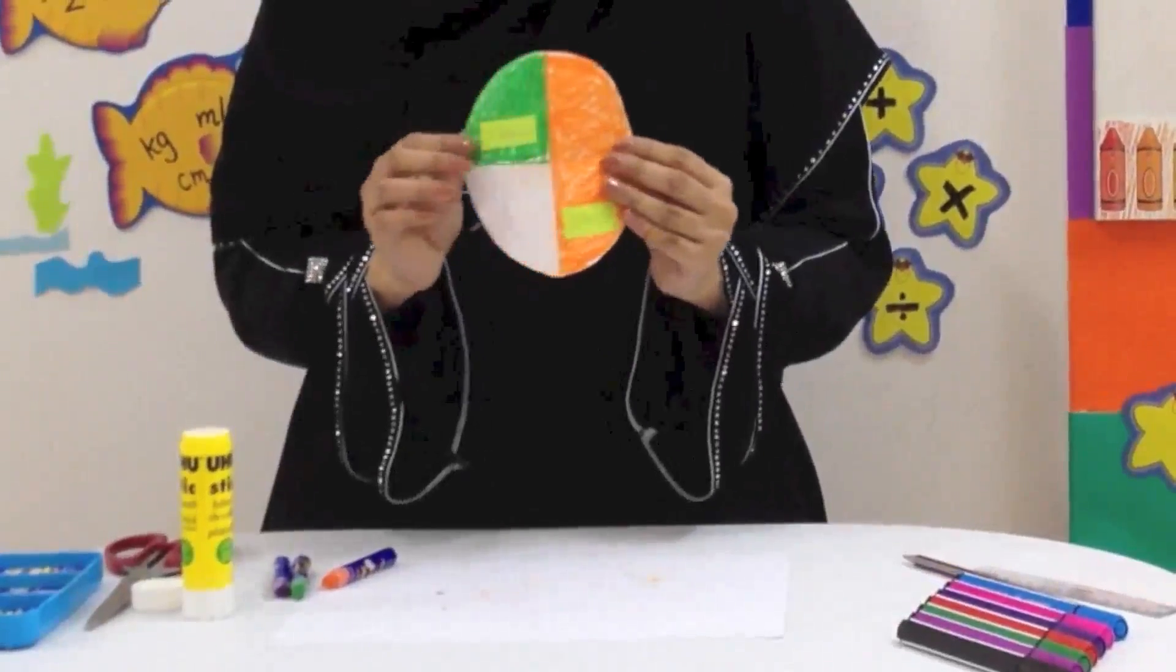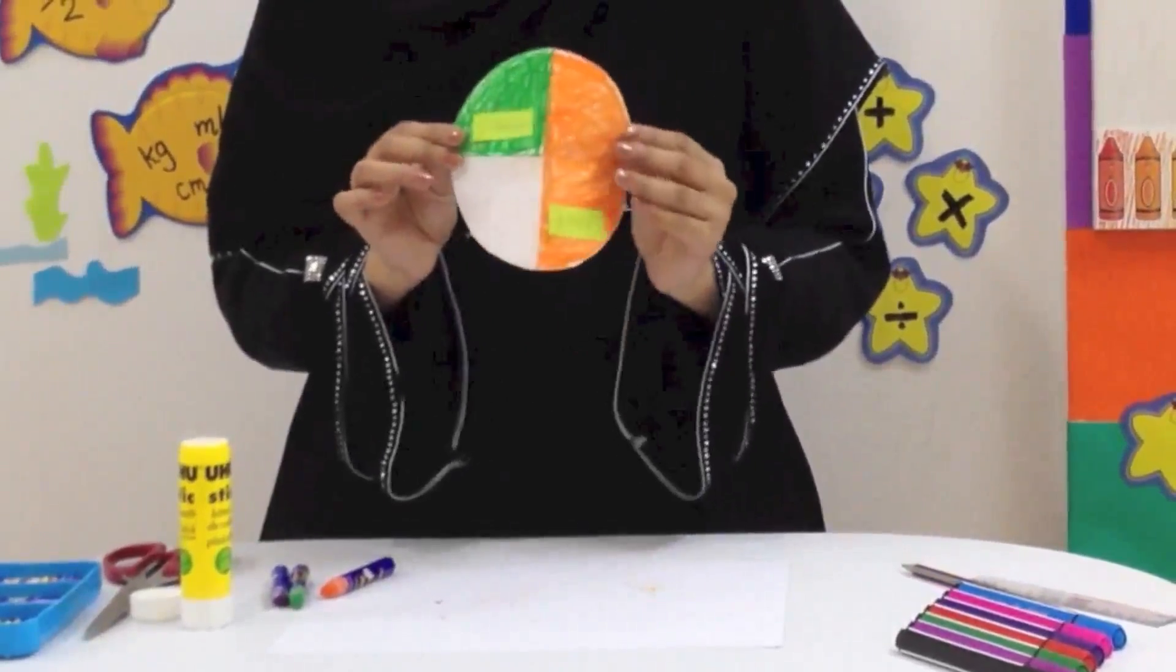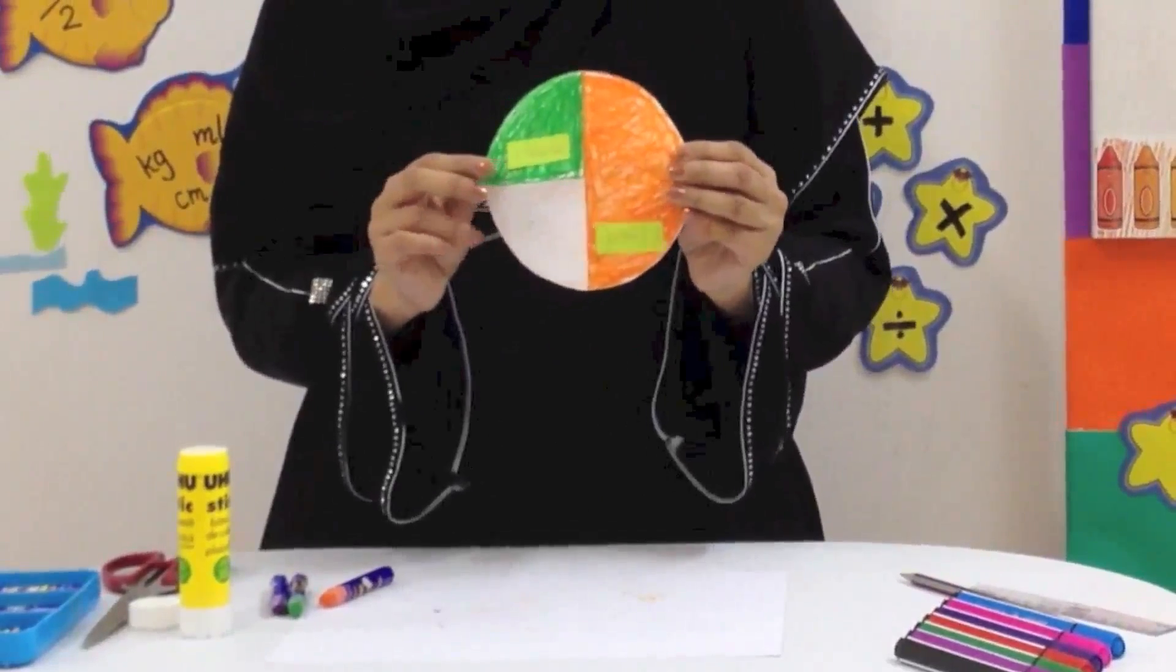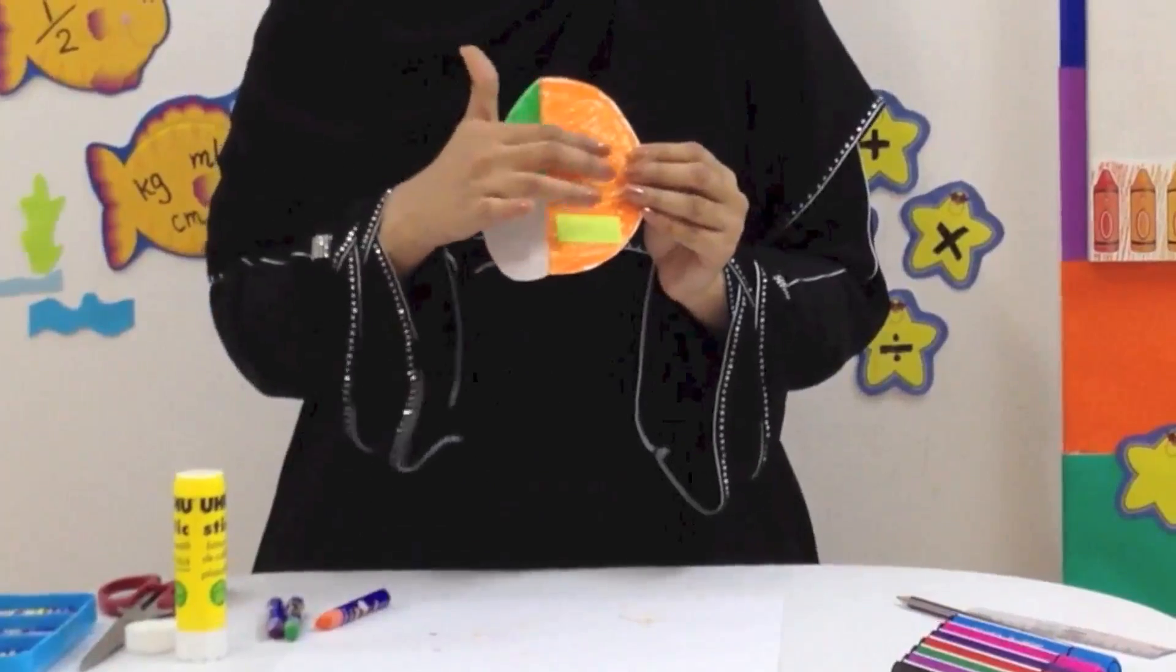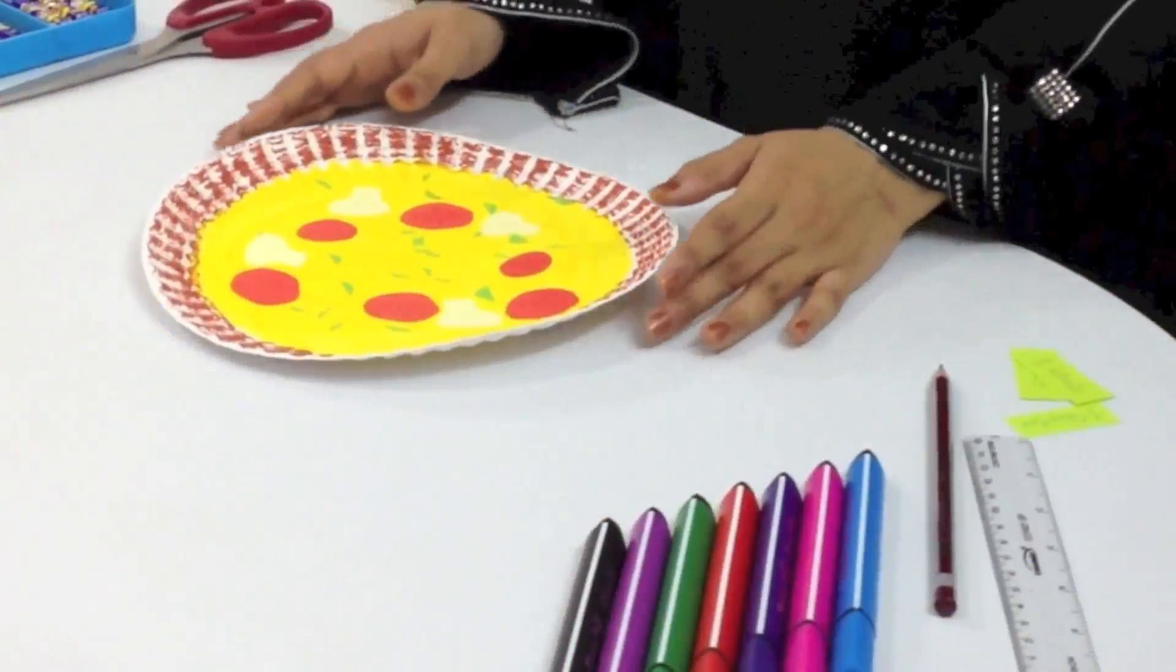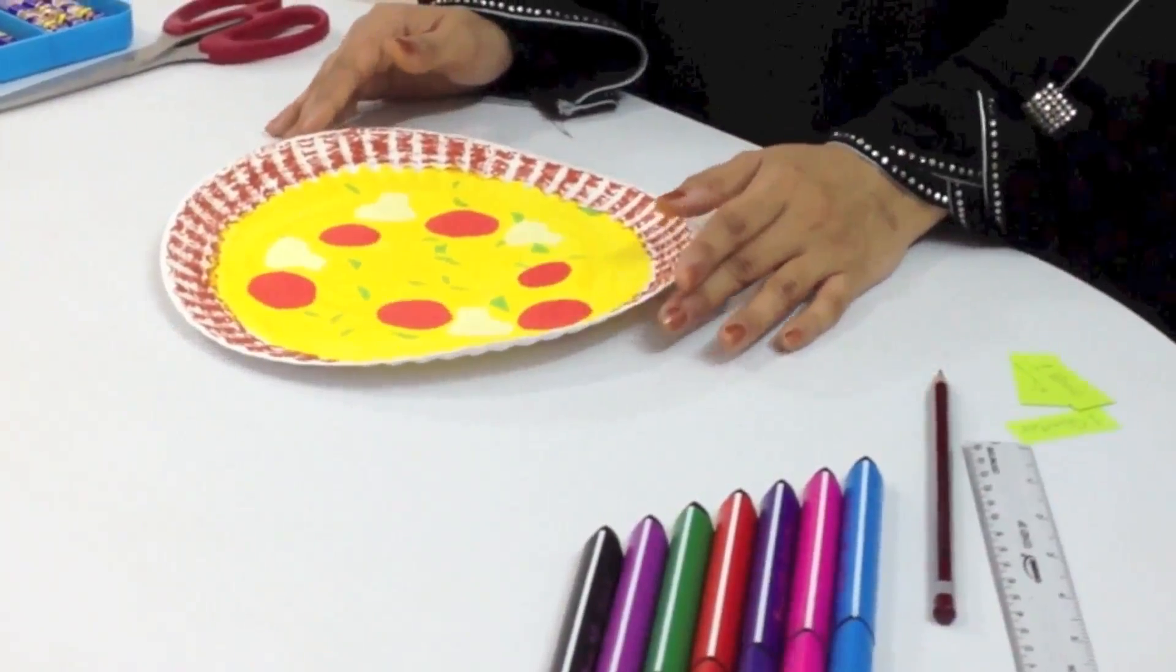This is the first semicircle and this is the other semicircle. A circle has four quarters: the first one, the second quarter, the third and the fourth. This is a pizza which is a whole.